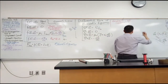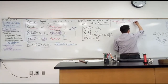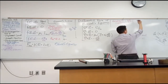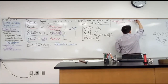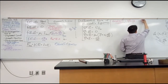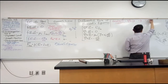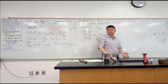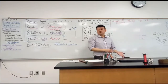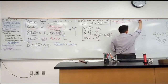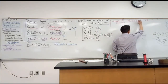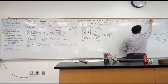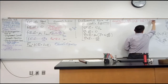It's represented by this upside-down triangle with a little vector arrow on top, because it's a vector operator. In Cartesian coordinates, it has three components — x-hat, y-hat, z-hat — and each component is a partial derivative: derivative with respect to x, derivative with respect to y, derivative with respect to z.